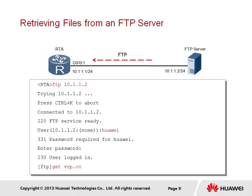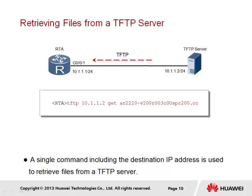The command 'get vrp.cc' allows the client to retrieve a copy of the file named vrp.cc from the FTP server. In the case of a TFTP server, the connection establishment is more transparent, since it is carried out as part of the file transfer process of TFTP. The TFTP process is initiated through the TFTP command, the destination server is specified along with the file to be transferred, and the file is reliably transferred through acknowledgements sent by TFTP rather than through TCP.